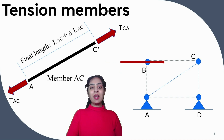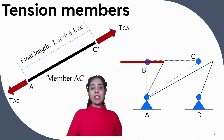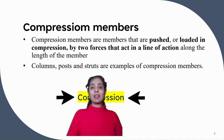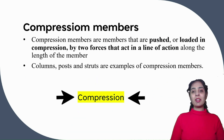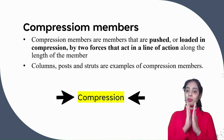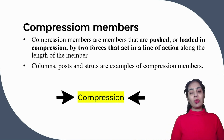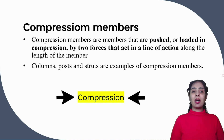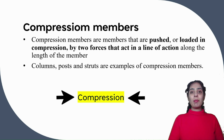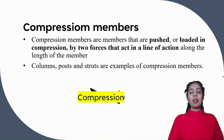The final length of the member is L(A-C) plus delta L(A-C). Compression members are the members that are pushed or loaded in compression by two forces that act in a line of action along the length of the member. Columns, posts, and struts are examples of compression members.